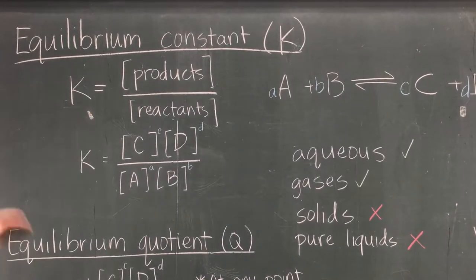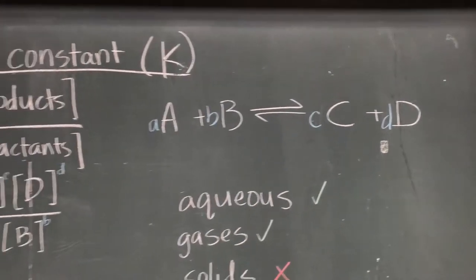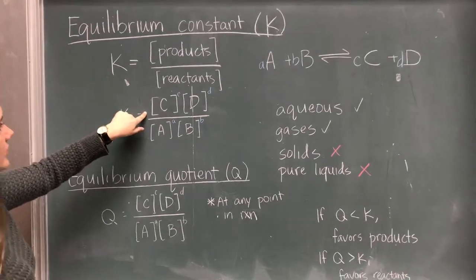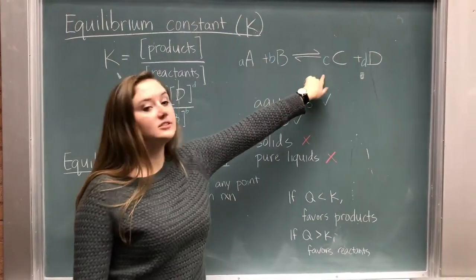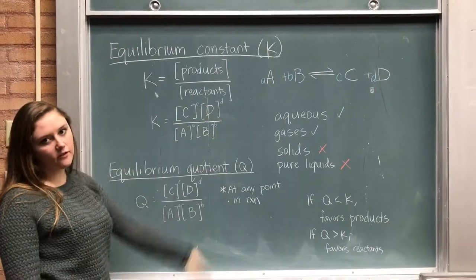So if we look at our simple reaction, A plus B goes to C plus D. When we're finding our equilibrium constant, K, we take the concentration of C, raised to the stoichiometric coefficient, little c, times the concentration of D, raised to its coefficient,